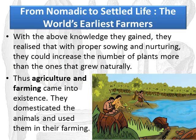With this knowledge, they realized that with proper sowing and nurturing they could increase the number of plants more than those that grew naturally. By sowing the seeds properly and taking care of the growing seeds, they could increase the number beyond what was available naturally. Thus agriculture and farming came into existence. They also domesticated animals and used them in their farming.